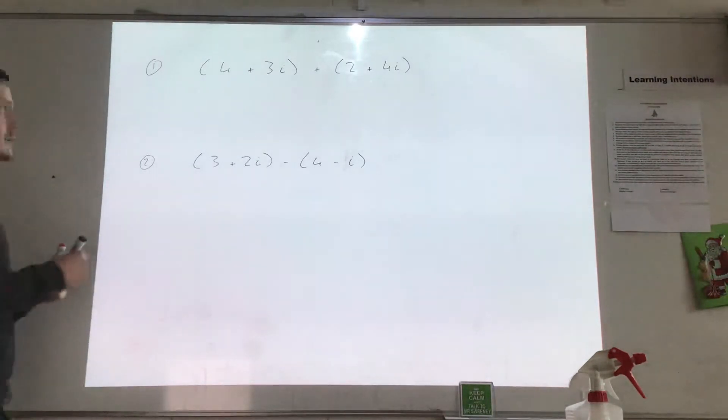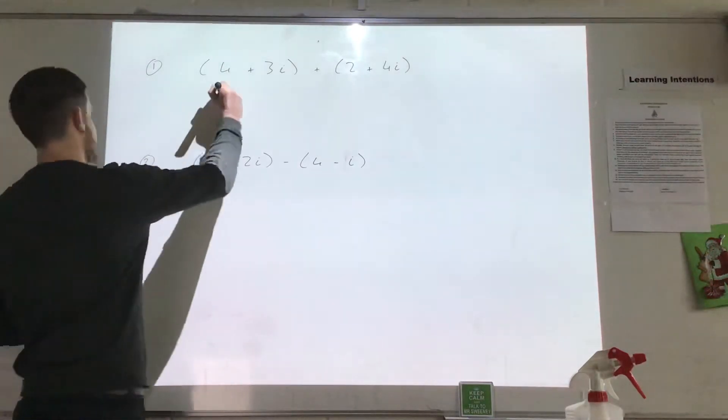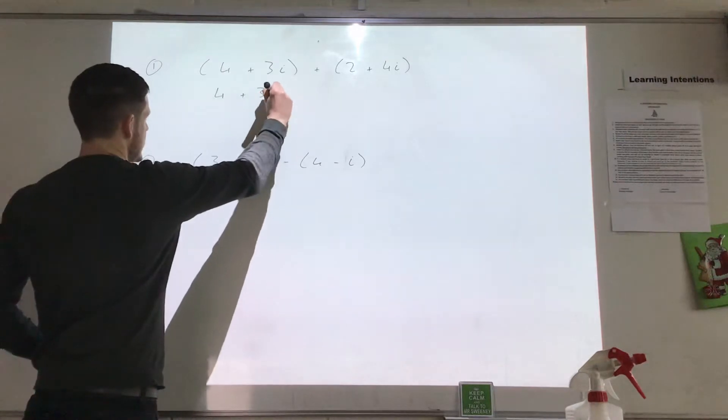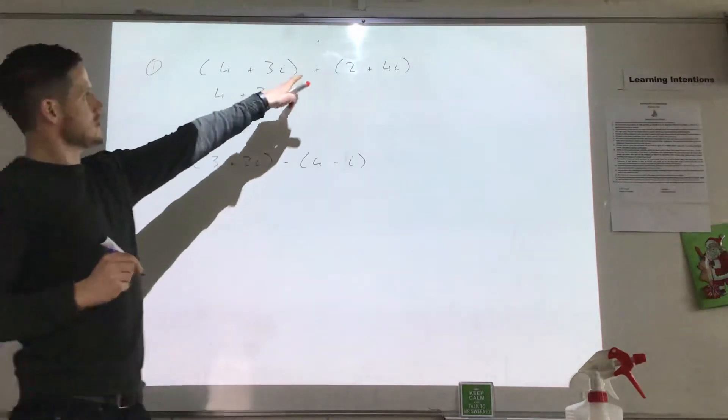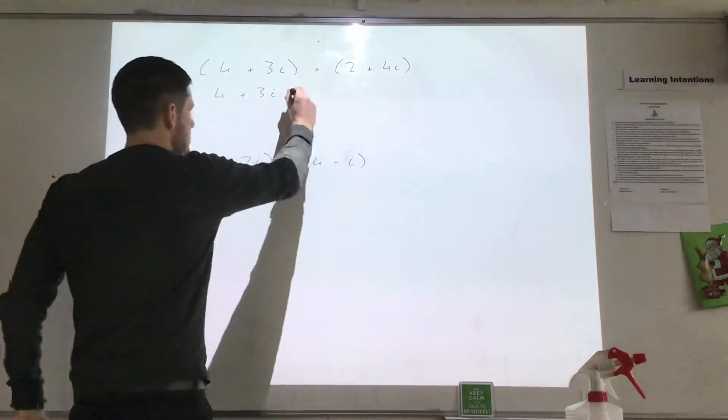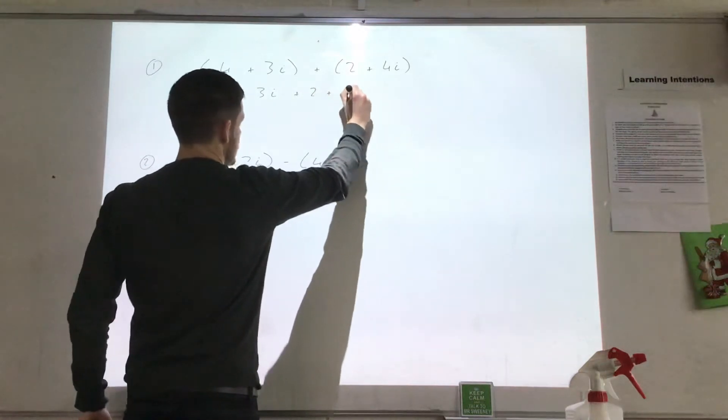So first of all I'm going to get rid of the first bracket here. It comes in a bracket, I know it's a little bit confusing but we're not too worried about that. So I'm left with 4 plus 3i. Now because this is a plus, when there's a plus here all we do is just get rid of this bracket as well. So it's plus 2 plus 4i.